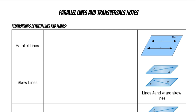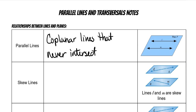Today we're going to go over parallel lines and transversal notes. Parallel lines are coplanar lines that never intersect. Here on the right is an example of parallel lines — they are both on the same plane and they will never touch.